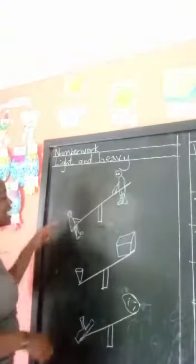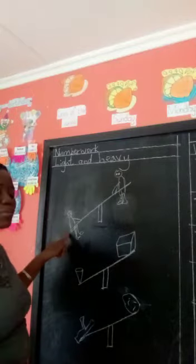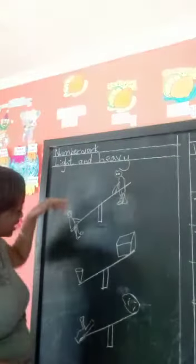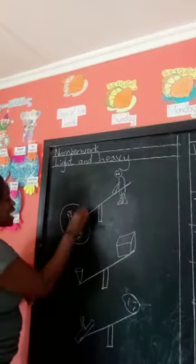So can we start, this boy or this boy? Who is heavy? This boy is the one who is heavy because that is why the seesaw is down. So what do we do? We circle.